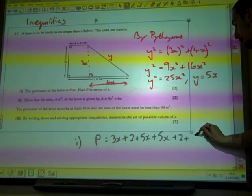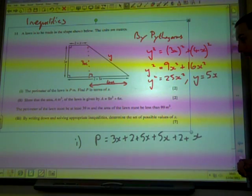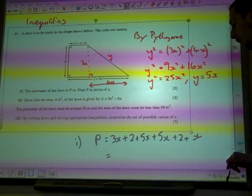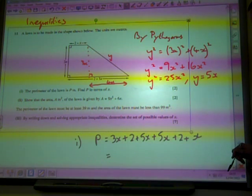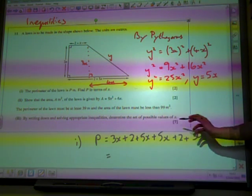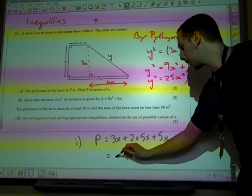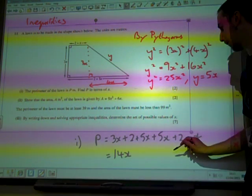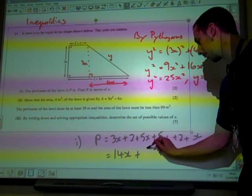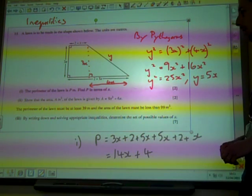That 3X plus 2 plus 5X plus that Y length, which we now know is 5X, plus that little bit at the top, which is 2 plus X. And so we've got 14X plus 4. And that would do for that first part.